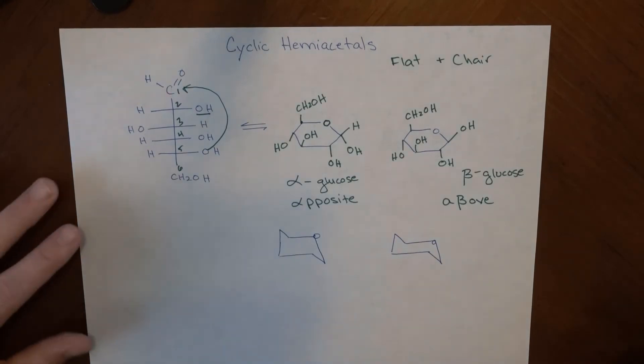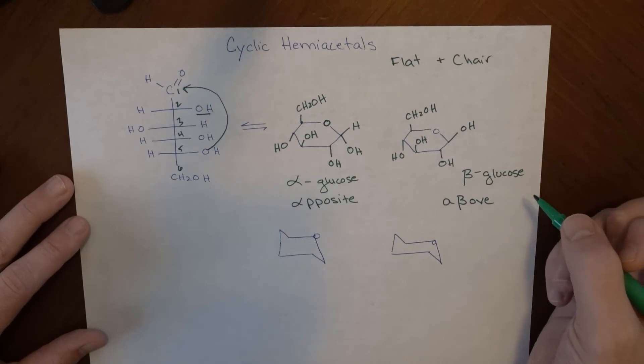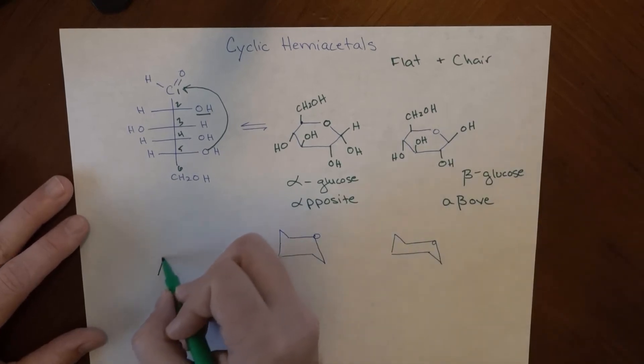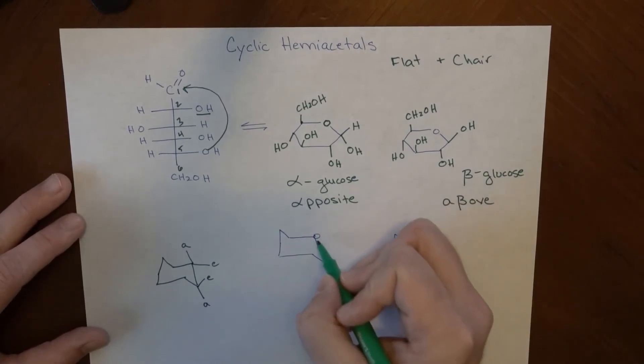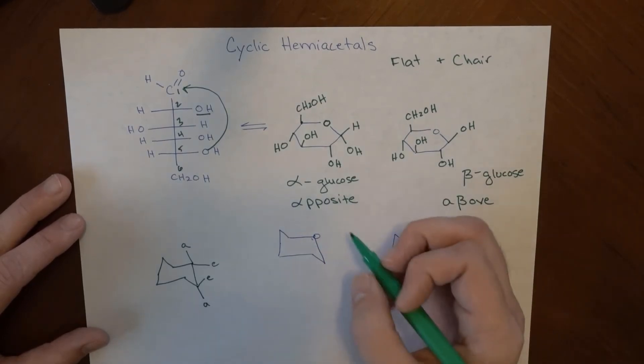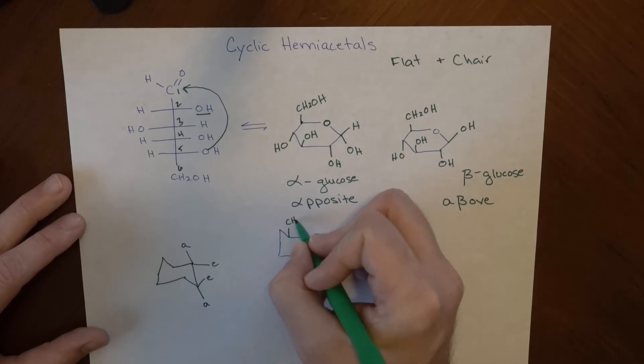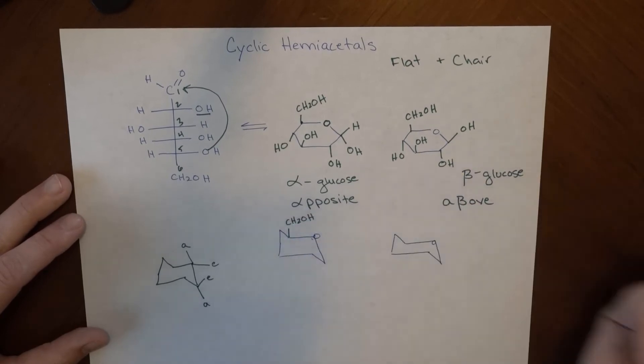So how do we represent these things as chairs? Well, we have to go back to thinking about, in terms of just general chairs, things can be in axial or equatorial positions. So here is an axial position, here is an equatorial position. Here is an axial position, here is an equatorial position, and remember they change as we go around the ring. So carbon, this is the oxygen here, so the carbon that is below.